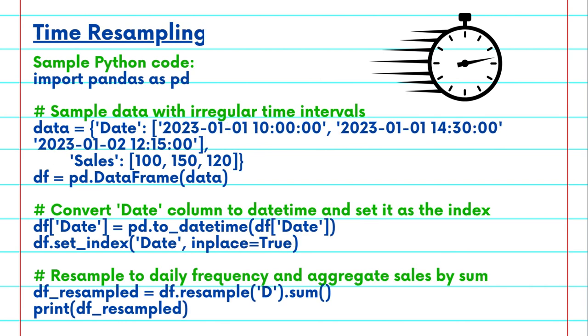Time resampling. Sometimes your time series data may be recorded at irregular intervals. To standardize the time intervals, you can use time resampling. For example, if you have sales data recorded at various times during the day, you can resample it to a consistent frequency such as daily. This involves aggregating the data for each day, summing up the sales figures for that day.